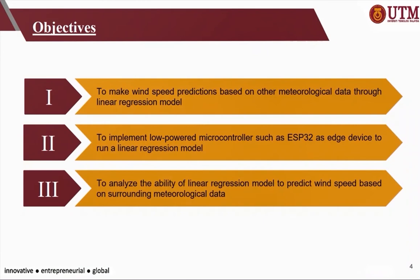The objective of this project is to make wind speed prediction based on other meteorological data through a linear regression model, and to implement a low-power microcontroller such as the ESP32 device to run a linear regression model. Besides that, this project is also aimed to analyse the ability of the linear regression model to predict wind speed based on surrounding meteorological data.